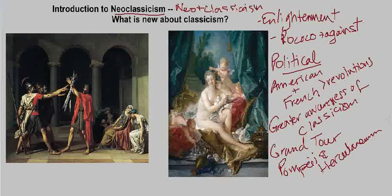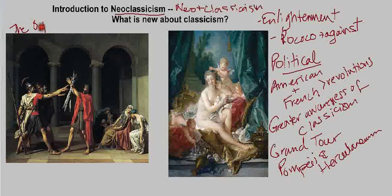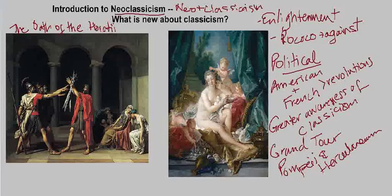Moreover, neoclassical thinkers and artists were interested in capturing the philosophical ideals suggested to them in classical art — ideals like virtue, truth, liberty, and purity. Now let's take a quick look at the Oath of the Horatii, probably the most quintessential example of neoclassical painting. This is a painting by Jacques-Louis David, and it dates to 1784.